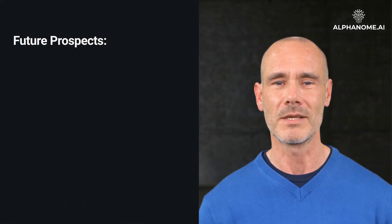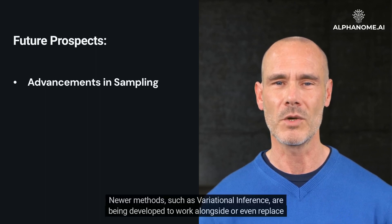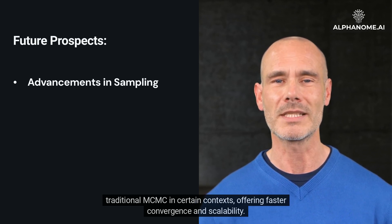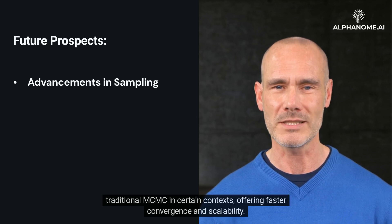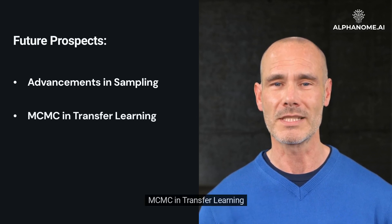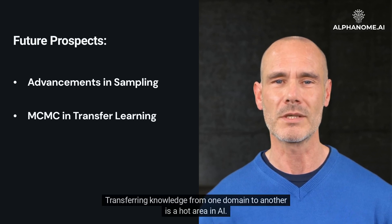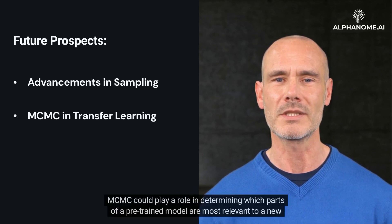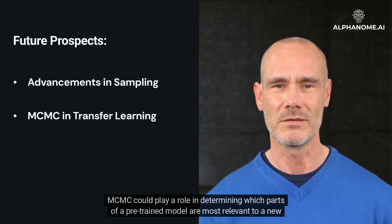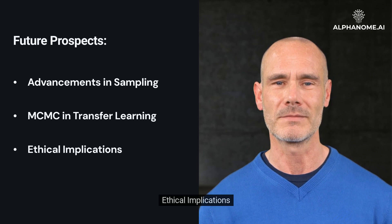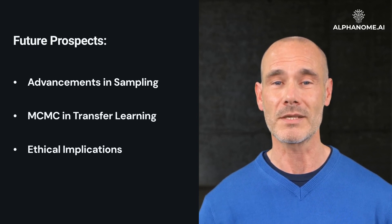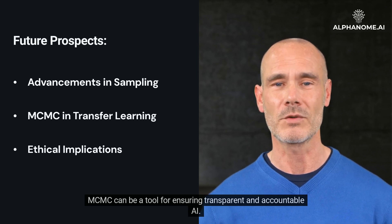Future prospects. Advancements in sampling: newer methods, such as variational inference, are being developed to work alongside or even replace traditional MCMC in certain contexts, offering faster convergence and scalability. MCMC in transfer learning: transferring knowledge from one domain to another is a hot area in AI; MCMC could play a role in determining which parts of a pre-trained model are most relevant to a new task. Ethical implications: as AI systems make decisions with societal impacts, understanding the uncertainty in these decisions becomes paramount. MCMC can be a tool for ensuring transparent and accountable AI.